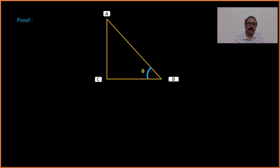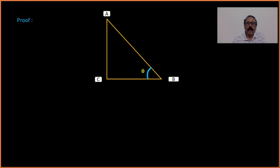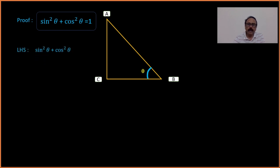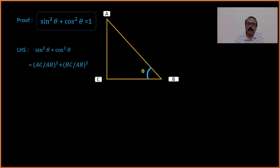Now let's prove these identities. To prove them, let's take a right-angled triangle. In this figure, I have taken the right angle at B, with angle theta. Opposite to theta, AC is the perpendicular, BC is the base, and AB is the hypotenuse. We are going to prove the first identity: sin²θ + cos²θ = 1. We take the left-hand side, sin²θ + cos²θ, and write the formulae for both. sinθ = perpendicular/hypotenuse = AC/AB.